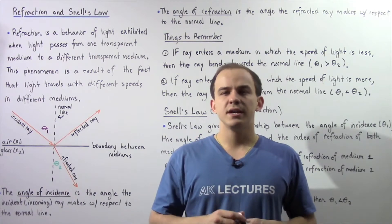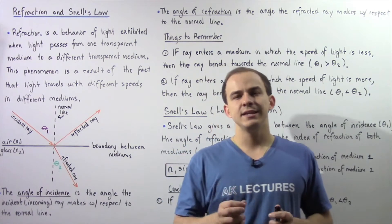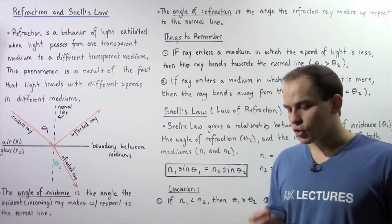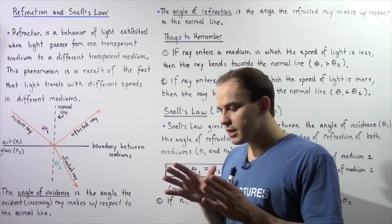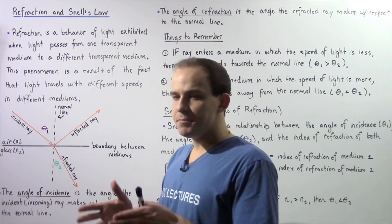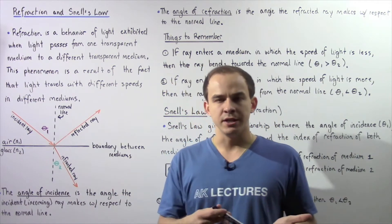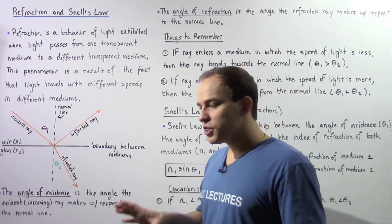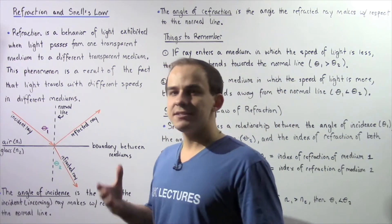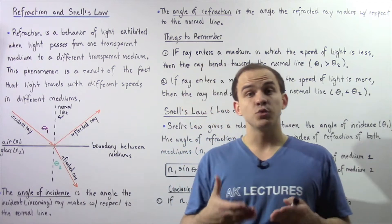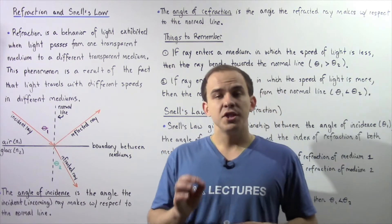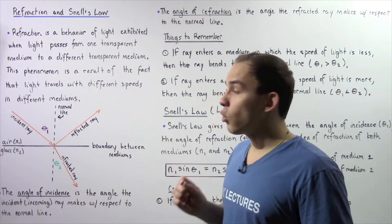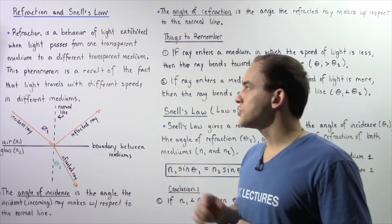In the previous lecture, we discussed a concept known as index of refraction. The index of refraction gives us the ratio of the speed of light within a vacuum to the speed of light within a certain particular medium. We know that the speed of light within different mediums has different values, and as a result of that fact, there exists a phenomenon known as refraction, or the bending of light.